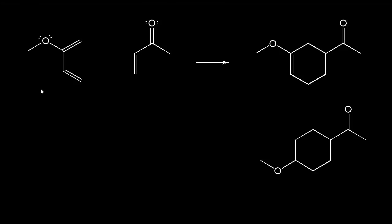For this Diels-Alder reaction, I've added an electron donating group to the diene. Here's the diene, and notice there's a methoxy group attached to this carbon. That means there are two possible regiochemical outcomes for this Diels-Alder reaction. We could form this product, or we could form this product. So which product is favored?